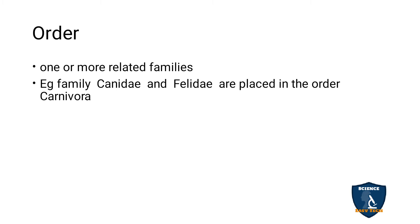Order is a group of related families. For example, Canidae and Felidae are both kept in the order Carnivora, because both cats and tigers are meat-eating animals — carnivores.